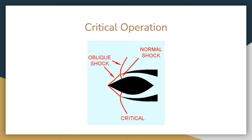Before going to the conditions, let me explain one thing. If we are going to design an engine, it will always have one design condition. For example, if I am designing a ramjet engine to operate between Mach 4 and Mach 5, it will be very efficient at that condition. If it operates below or above that range, there will be a drop in efficiency.